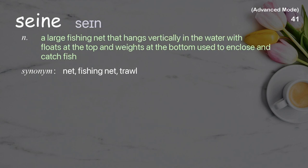Seine: A large fishing net that hangs vertically in the water with floats at the top and weights at the bottom, used to enclose and catch fish.